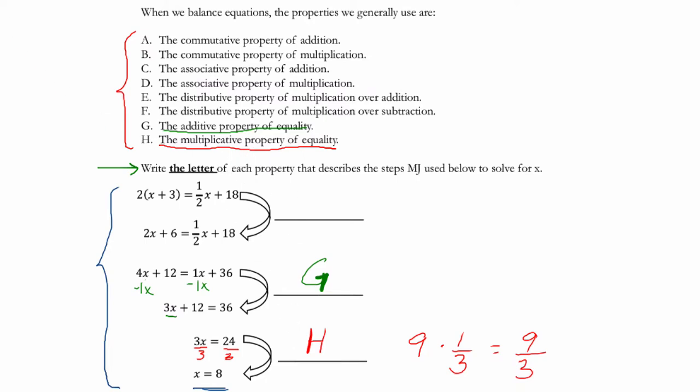Finally, we go to our first step here. And I notice that there's 2 times X plus 3, and they have 2X plus 6 over here. So that just tells me that they use the distributive property. They multiplied 2 by X to get 2X, and 2 by 3 to get 6. And this happened over addition. So we can put the distributive property of multiplication over addition, which is choice E. The distributive property helps us multiply a certain value, either over addition, or if there were a subtraction sign here, over a subtraction.